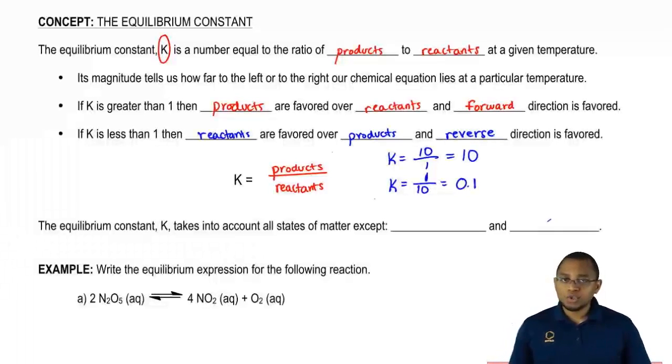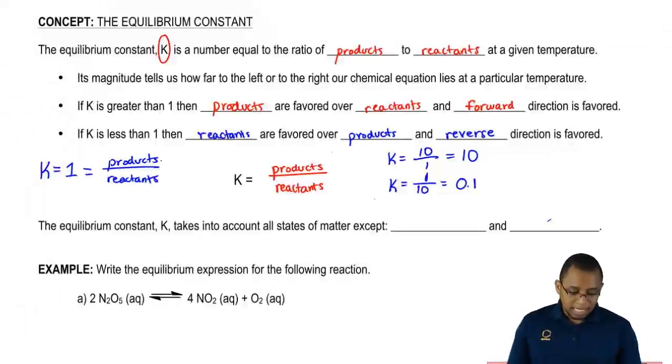Just remember these two differences, when K is greater than 1 and when K is less than 1. What if we say K was equal to 1? We know that this is products over reactants, so that means that our products and reactants would have to be equal. Let's say they're both 10. 10 over 10 is 1. When K equals 1, both our reactant and product amounts are equal to one another.